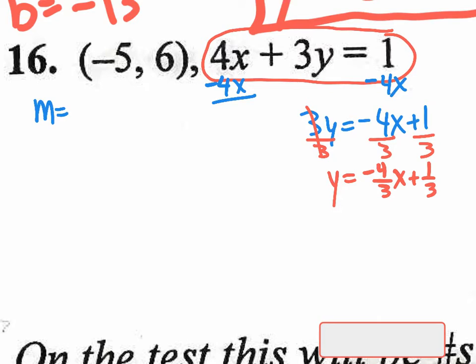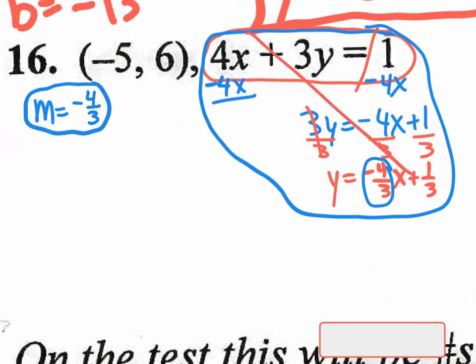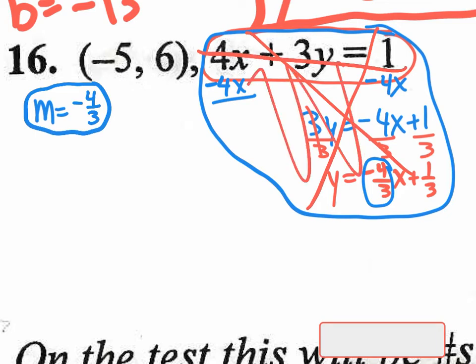Now you can identify the slope as -4/3. The original standard form equation didn't show the slope, so we converted it to slope-intercept form to see it. Since our line is parallel to this one, it has the same slope: -4/3. Once you have the slope, you don't need the original equation anymore.